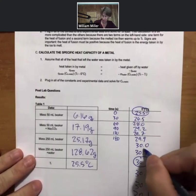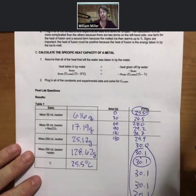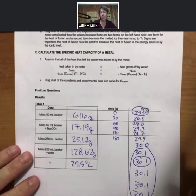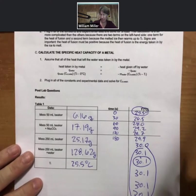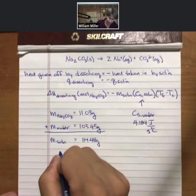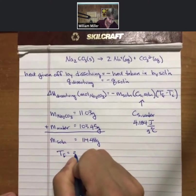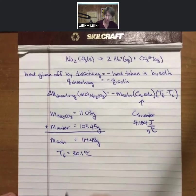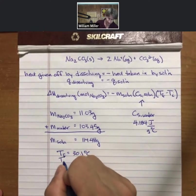The final temperature, identified as the maximum plateau region across the five readings, is 30.1 degrees Celsius. So T final is 30.1 and T initial is 25.5.